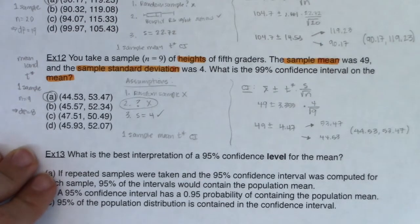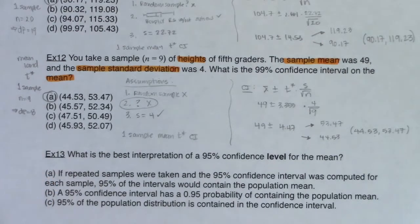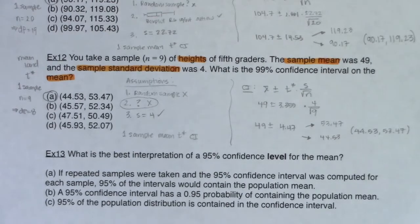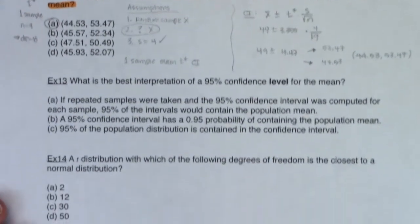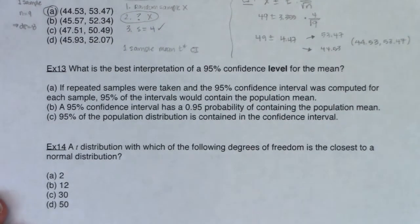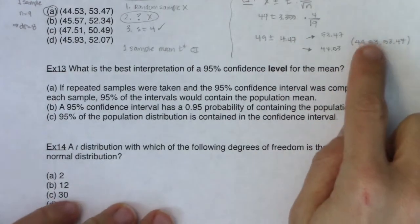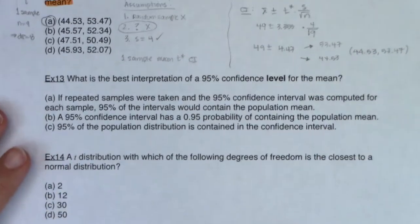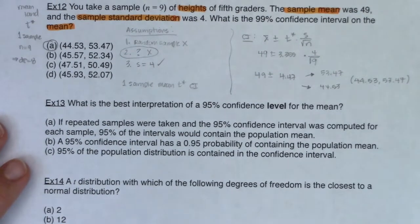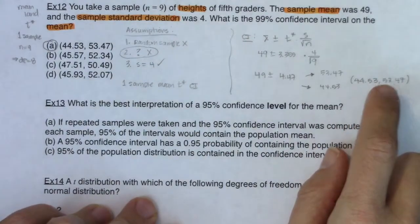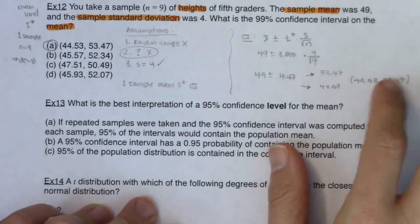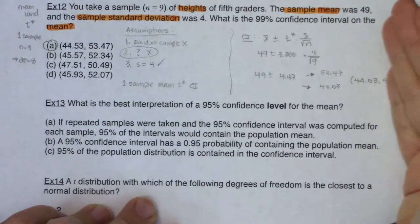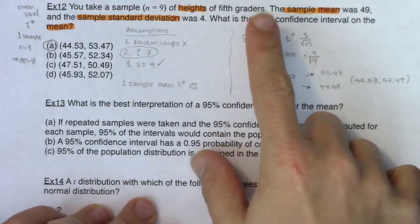So let's look at some more theoretical multiple choice questions. These are here to have a conversation about broader topics in this chapter. The first one is: how do we interpret the confidence level? There are a lot of misconceptions about what the confidence level actually means. People tend to say, oh, there's a 99% chance that the true mean is in this interval. And again, there's not a 99% chance that mu is in that interval. The population mean is either in this interval or it's not — we either got a good interval or a bad interval.